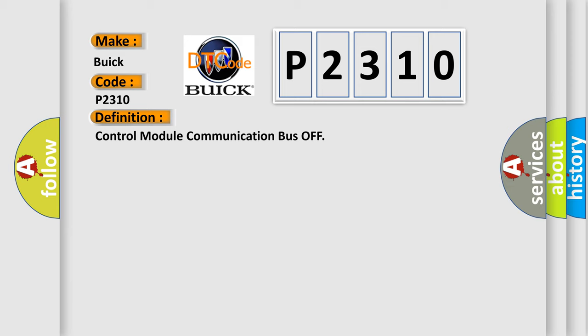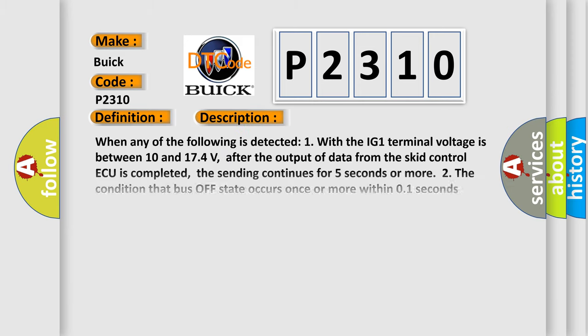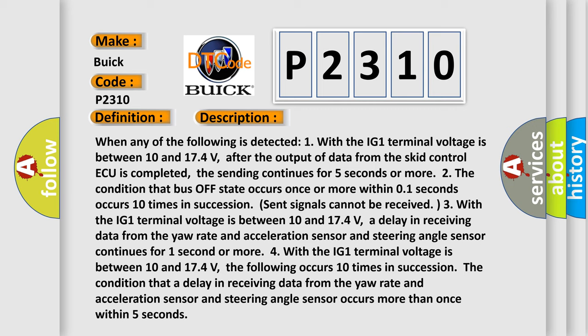And now this is a short description of this DTC code. When any of the following is detected: One, with the IG1 terminal voltage is between 10 and 17.4 volts, after the output of data from the SKID control ECU is completed, the sending continues for five seconds or more.